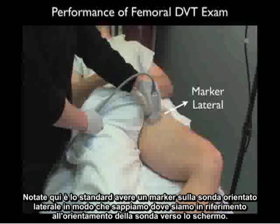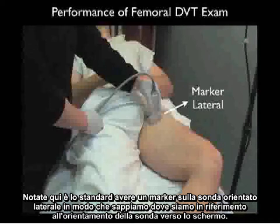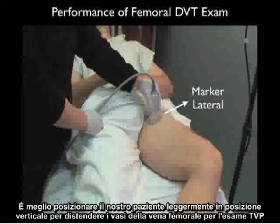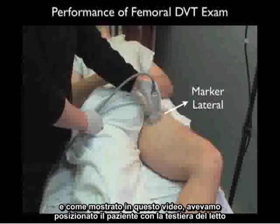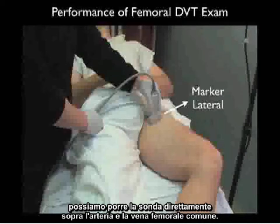Notice here it's standard to have the marker on the probe going lateral so that we know the orientation of the probe versus the screen. It's best to position the patient slightly upright to distend the femoral vessels for the DVT exam — as shown in this video, the patient had the head of the bed up about 30 degrees. We also want the leg slightly externally rotated so that we can place the probe directly over the common femoral artery and vein.